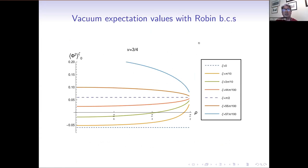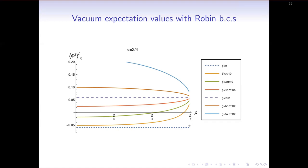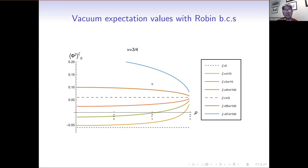These are the numerical results for the vacuum expectation value with Robin boundary conditions, with nu fixed at 3 quarters. The vacuum expectation value is on the vertical axis and the radial coordinate on the horizontal axis, where pi over 2 is the spacetime boundary. We've studied different values of the Robin parameter zeta. When zeta is zero we have the Dirichlet boundary condition, which is constant. When zeta is pi over 2 we have the Neumann boundary condition, also constant. For Robin parameters between zero and pi over 2 and also above pi over 2, as we approach the spacetime boundary, the vacuum expectation values approach the Neumann result, whereas Dirichlet keeps its own value.